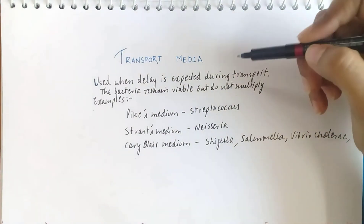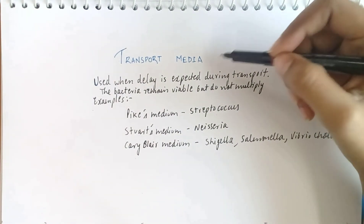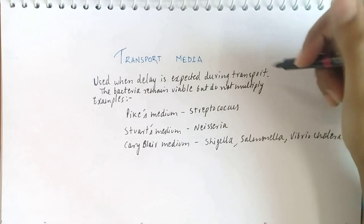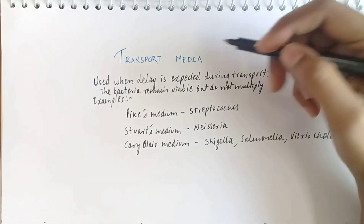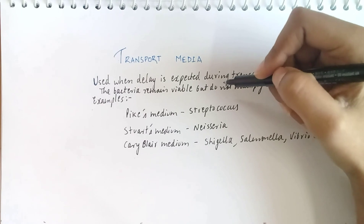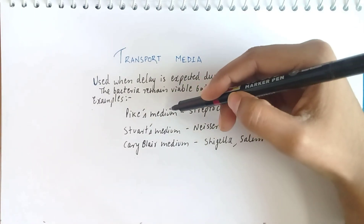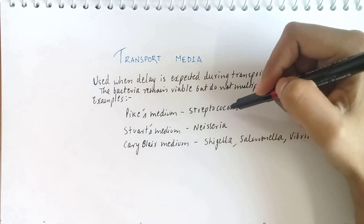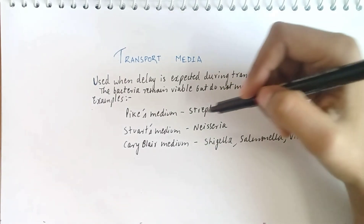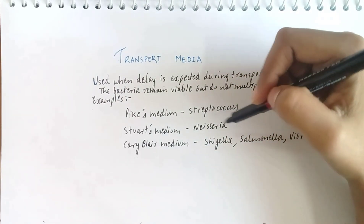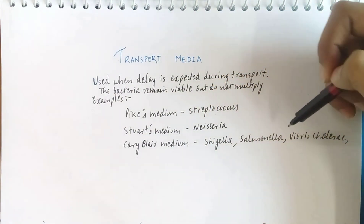The last media to discuss is transport media. It is used when a delay is expected during transport of the specimen to the laboratory. Bacteria do not multiply in transport media but only remain viable. Examples are Pike's medium for transport of Streptococcus, Stuart's medium for Neisseria, and Carry-Blair medium for Shigella, Salmonella, and Vibrio cholerae.